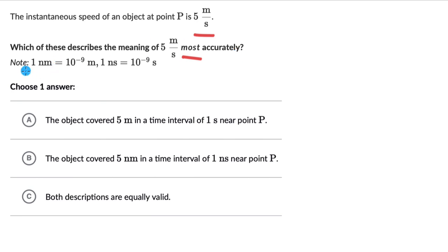There's a note which says 1 nanometer is equal to 10 to the power minus 9 meters, and 1 nanosecond is 10 to the power minus 9 seconds. Pause the video, read the options, and try this one on your own first.